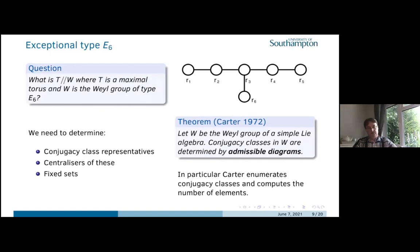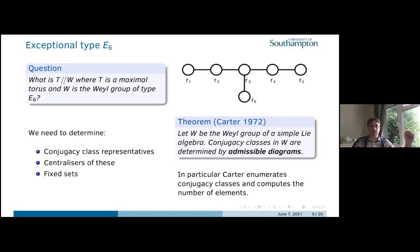Our task is to work out the conjugacy class representatives, their centralizers, and the fixed sets. For conjugacy classes in the An case the Weyl group is permutations so conjugacy classes correspond to partitions. In the E6 case it's more complicated, but Carter worked this out back in 1972. He showed that conjugacy classes correspond to certain diagrams — subsets of the Dynkin diagram, with equivalences given by the braid relations. In particular, a single point is a single point regardless of which node you choose.